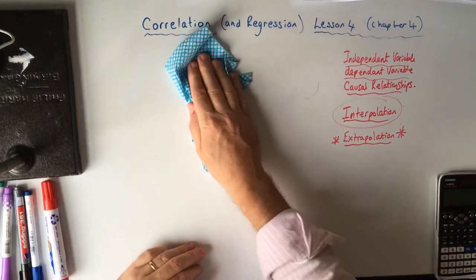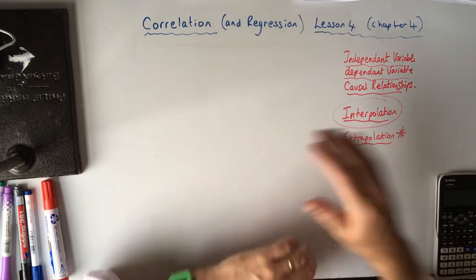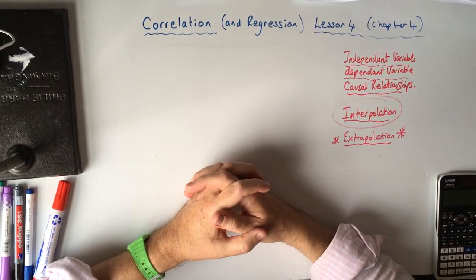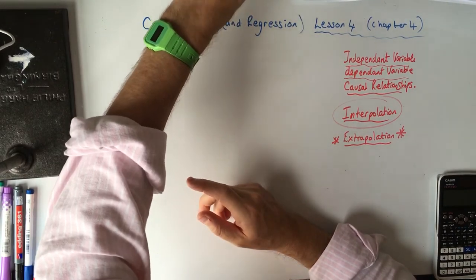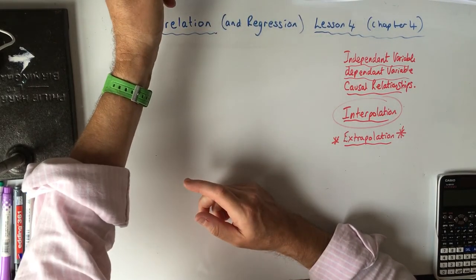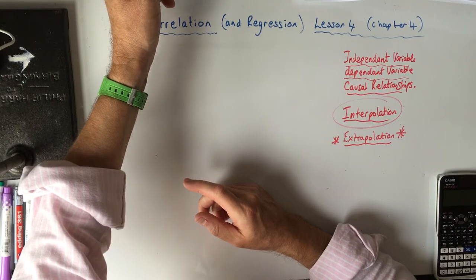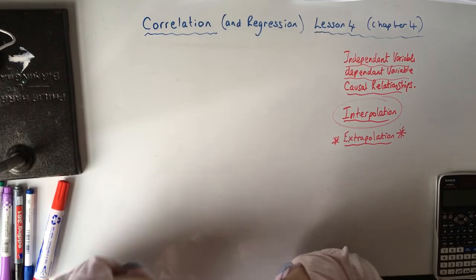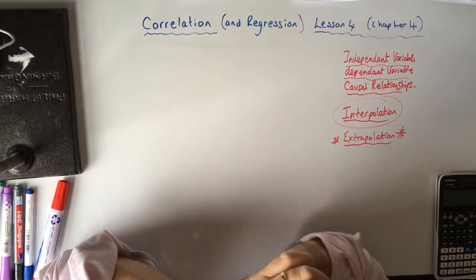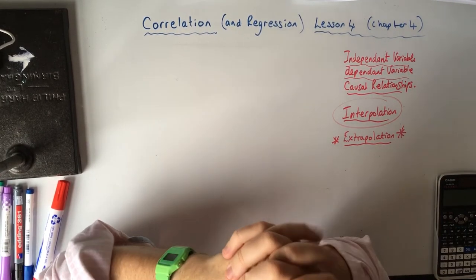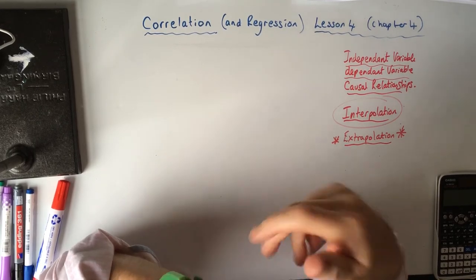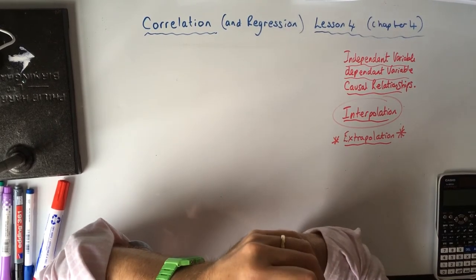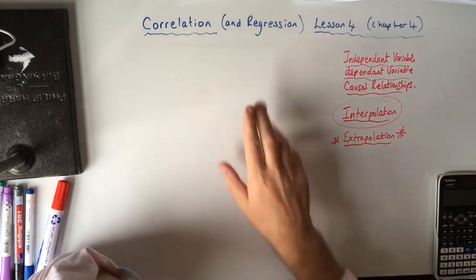I'm not going to do anything from the first exercise because it's just getting you to plot scatter graphs from tables, asking you to think about outliers, comment on whether it's strong or weak correlation, and whether it's a causal effect. You can read the answers in the back for those. But I am going to talk about regression — so what is regression?